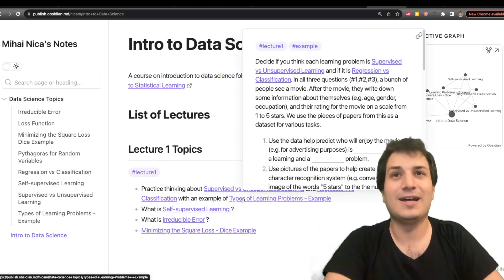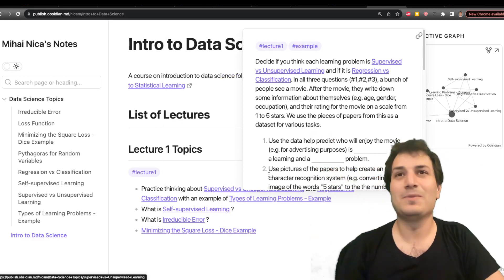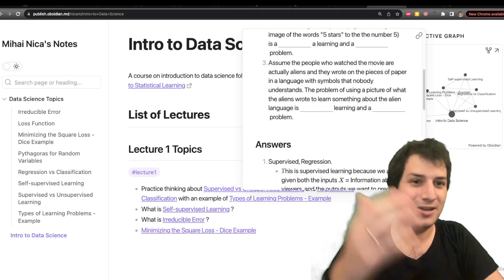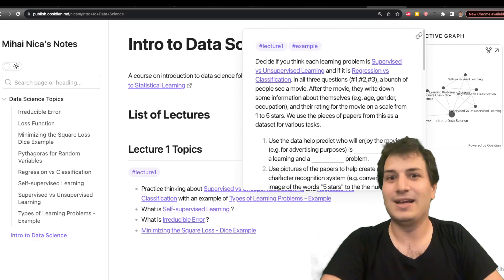So if you watch the video you can go through this example again and see all these different problems that we did about a movie theater and rating things one to five stars. You can try it yourself.